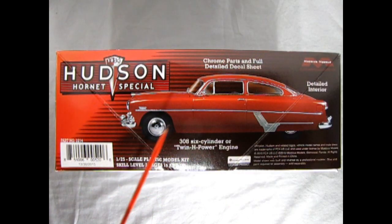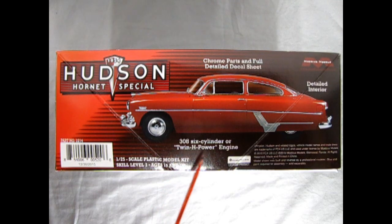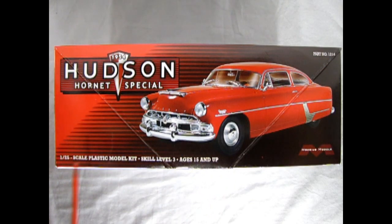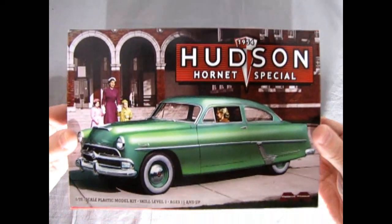The model kit includes chrome plated parts and full detailed decal sheet, detailed interior and a 308 six-cylinder or twin H power engine. This side of the box features a full build of the 1954 Hudson Hornet Special by Mobius Models. And now let's remove the lid.